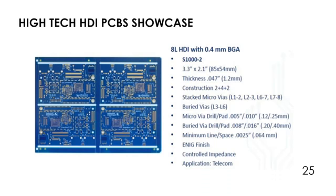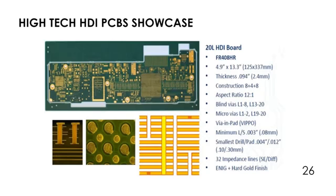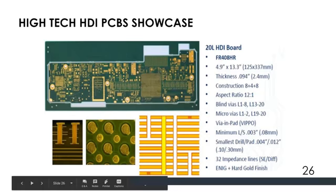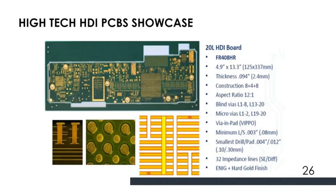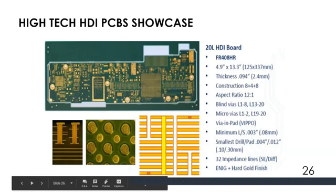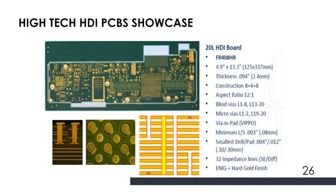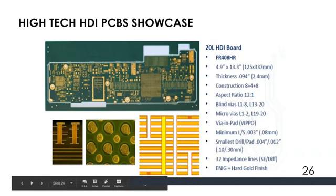Here it is a 20-layer board with blind vias on both sides. Via-in-pad is there. L1 to L8, L32 to micro-vias between L1 and L2, L19 and L20. Blind via micro-vias. 32 impedance layer addresses are there — single-ended and differential. That is a lot.